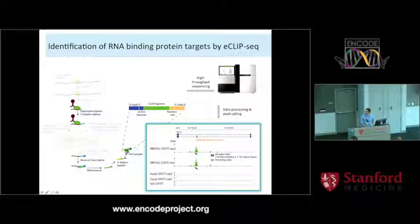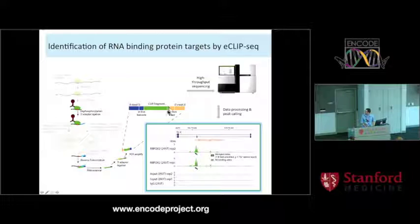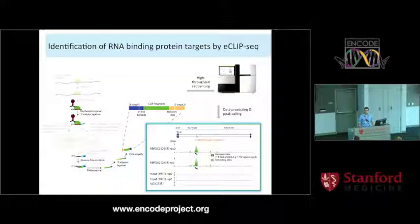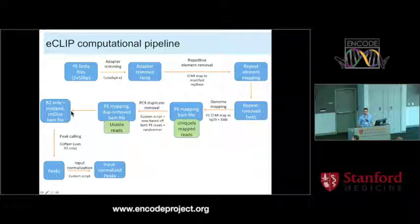It turns out that when you do reverse transcription, RT enzymes tend to stop at the crosslink site, because even after proteinase K cleavage, you have an amino acid still crosslinked there. So the reverse transcription end - in this case read two, specifically the first base of read two - is actually typically the position exactly where the RNA binding protein is crosslinked. That's why peak-calling is done from read two.